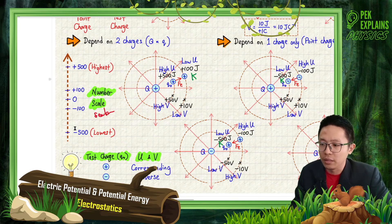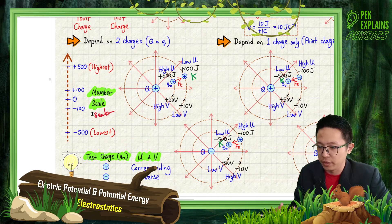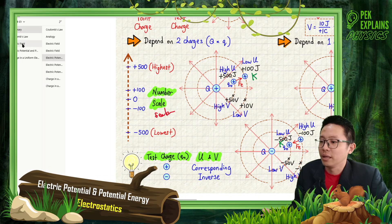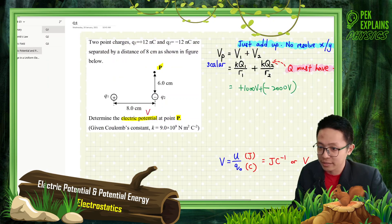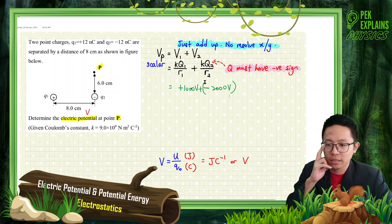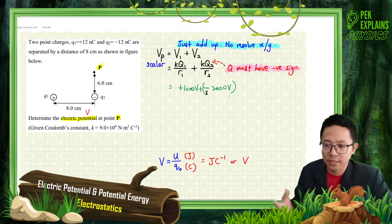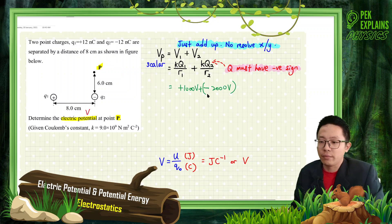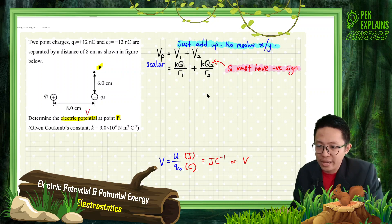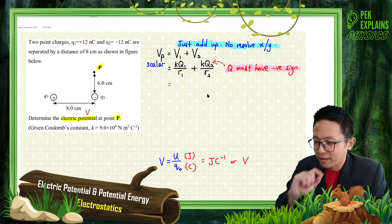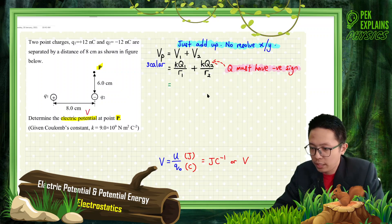For scalar quantity, the negative sign is about magnitude — the lower on the number scale, the lower the potential. Now let's solve the question. For K, it's 9 times 10 to the power 9.